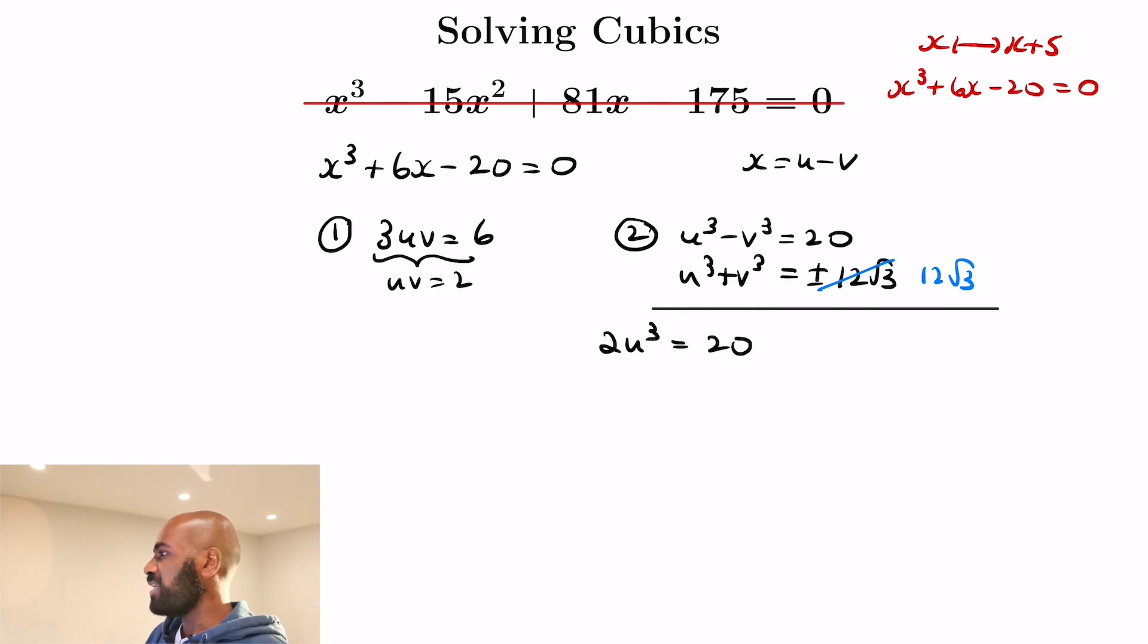This gives us that 2u cubed is 20 plus 12 root 3, and so u cubed itself is going to be half of what the right hand side is.